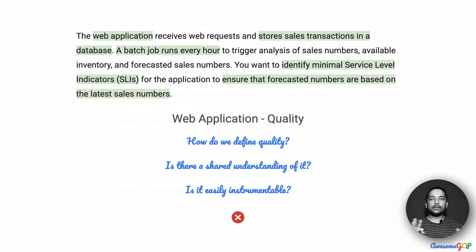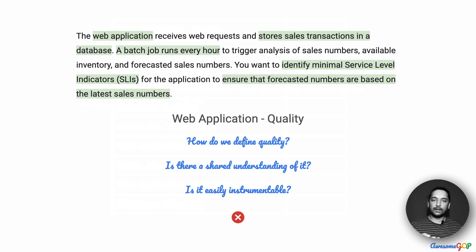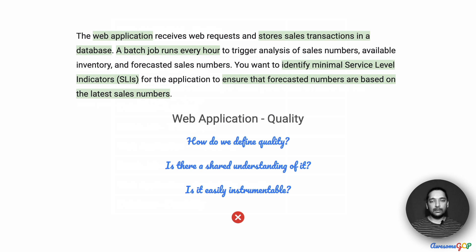In general, quality is a very fuzzy measure, which is not quantitative — it is more qualitative and subjective. There is no shared understanding of what quality is, and it is not easily instrumentable. This was one of the main options I could clearly eliminate because of the nature of quality. So I'm very strong and very sure that this would be a wrong answer, and I'm going to definitely eliminate this.